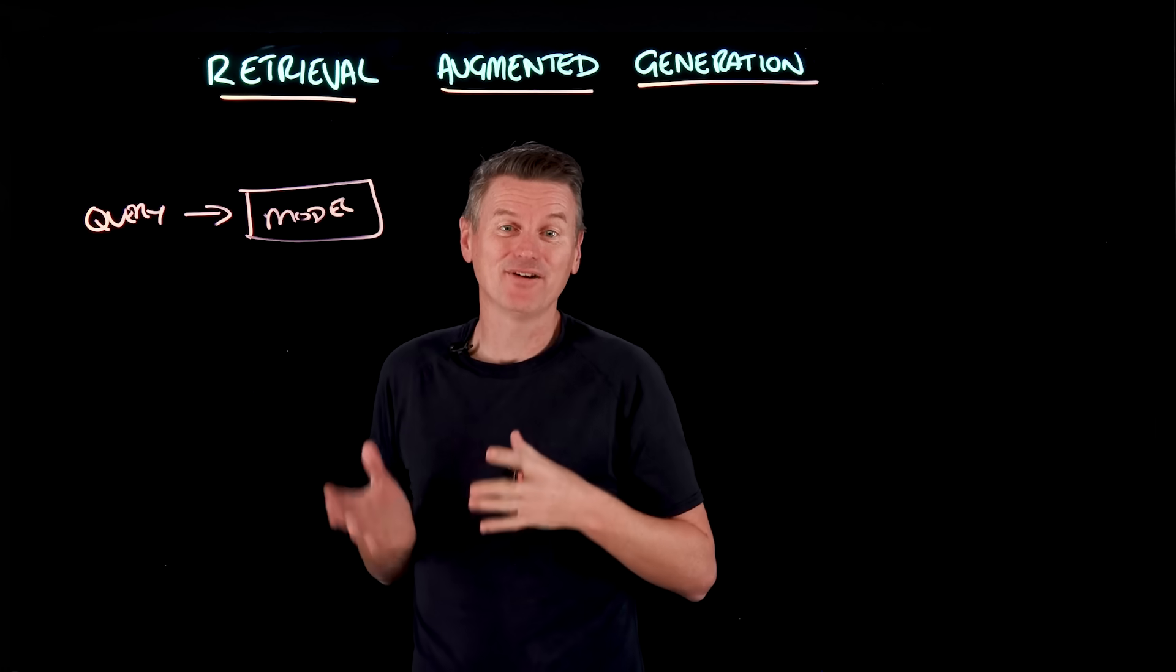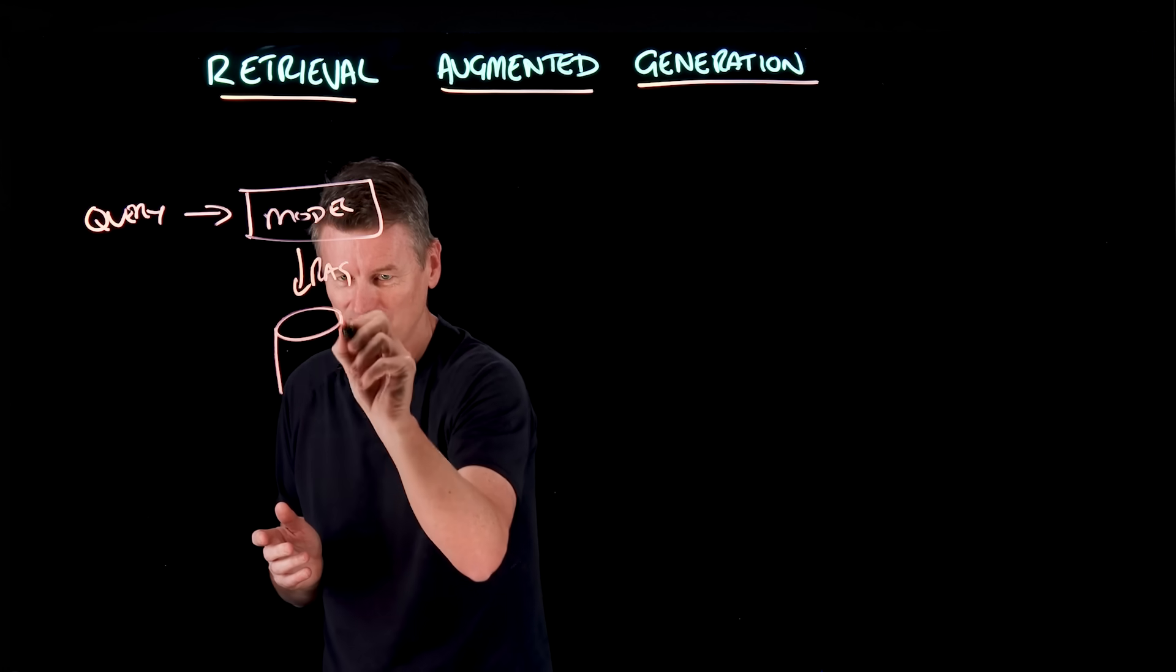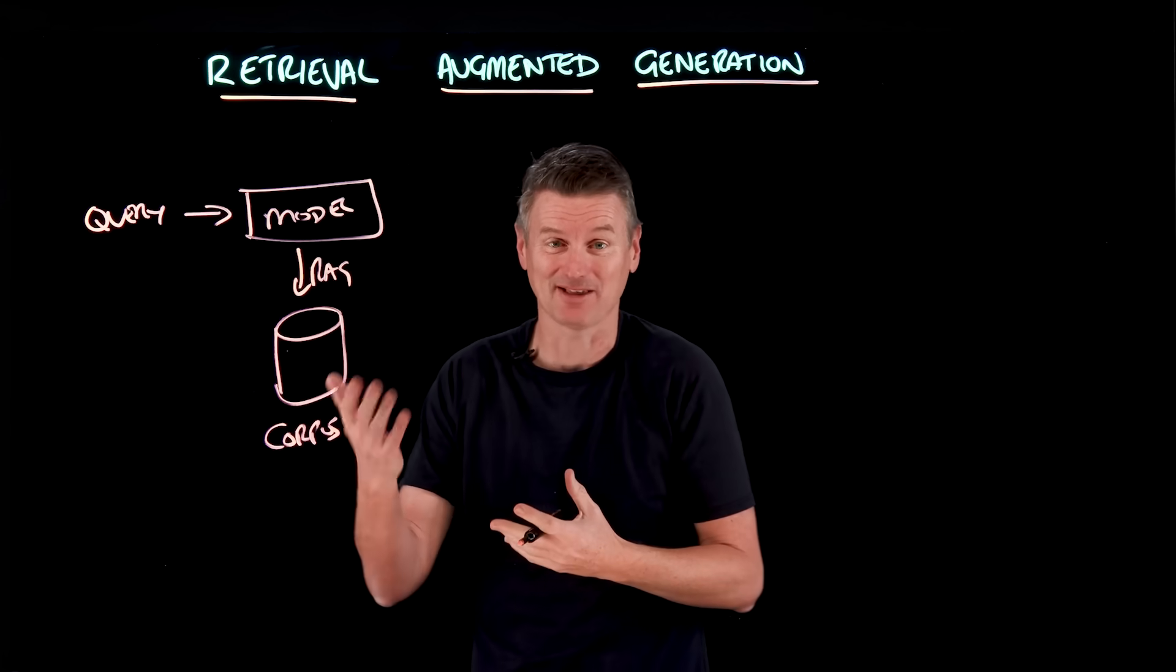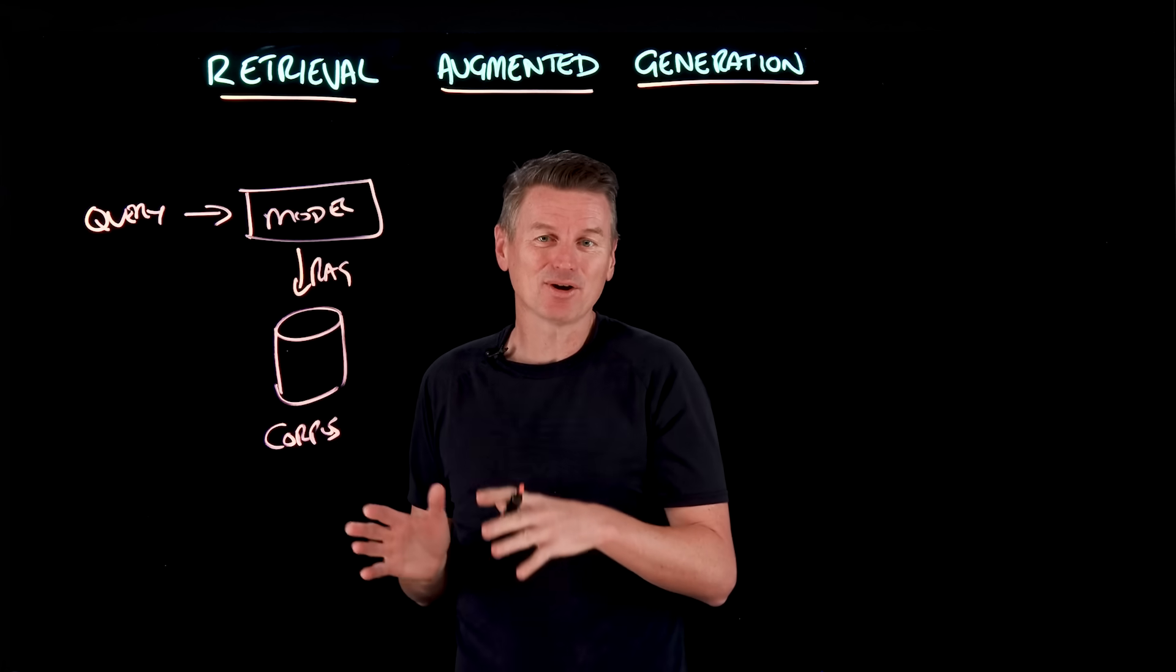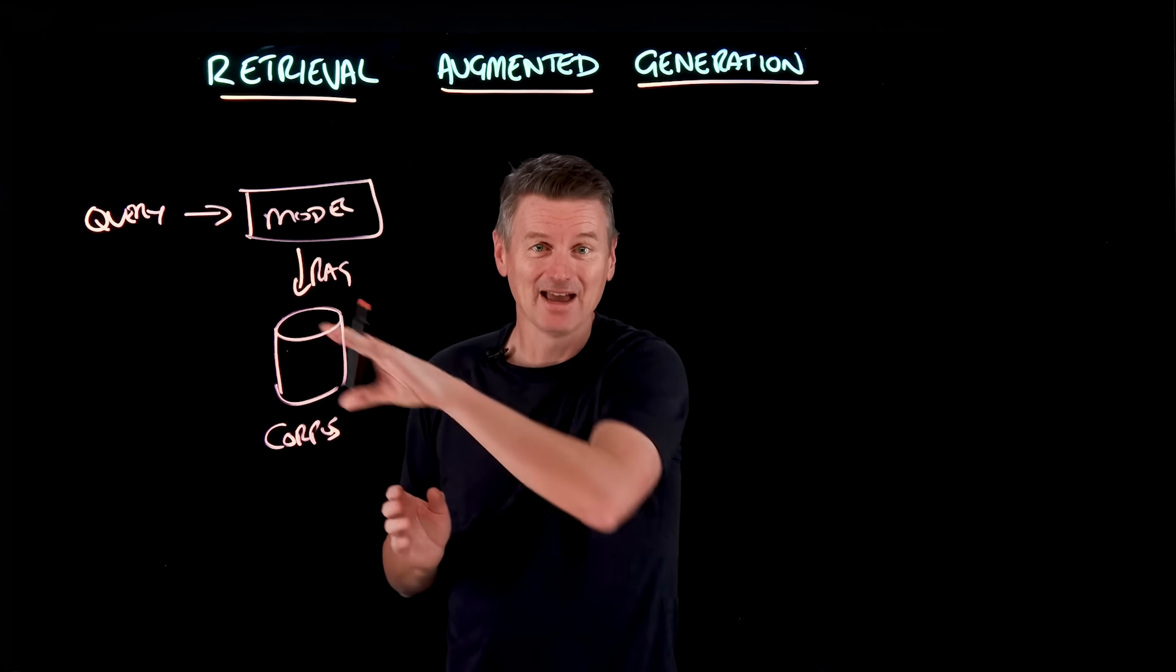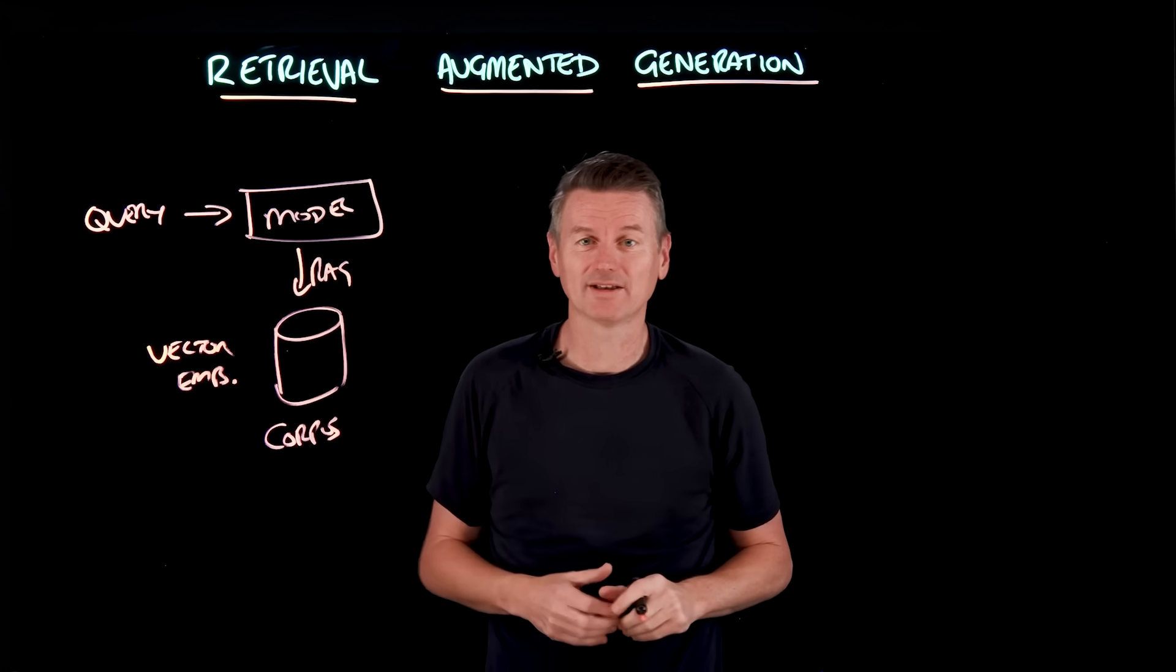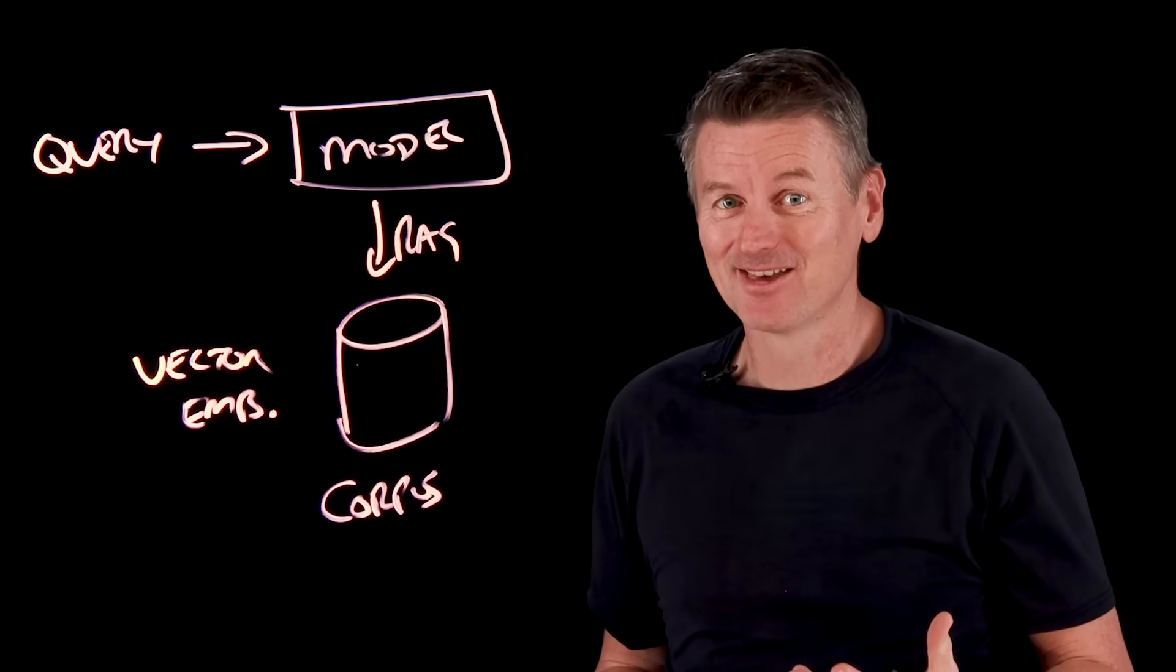What RAG is going to do is it's first going to go searching through a corpus of information. So we have this corpus here full of some sort of data. Perhaps that's your organization's documents - spreadsheets, PDFs, internal wikis, stuff like that. But unlike a typical search engine that just matches keywords, RAG converts both your question, the query, and all of the documents into something called vector embeddings. So these are all converted into vectors, essentially turning words and phrases into long lists of numbers that capture their meaning.